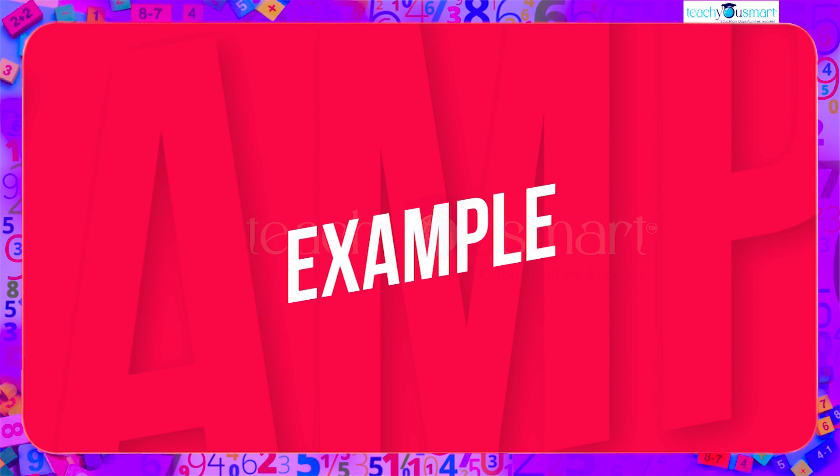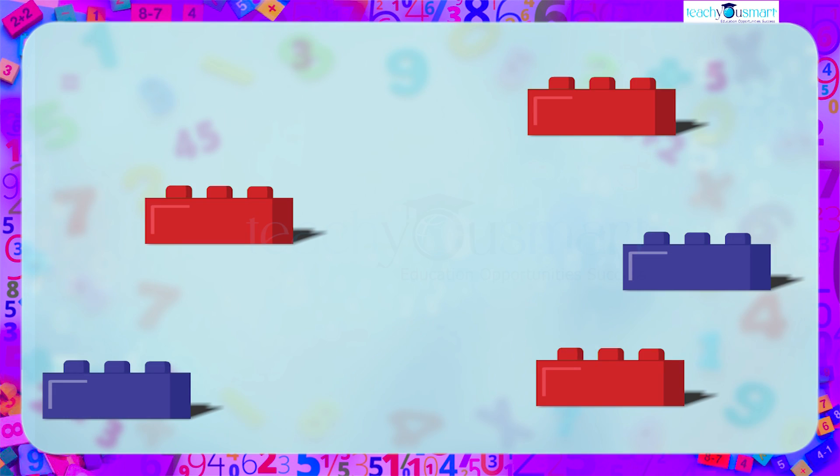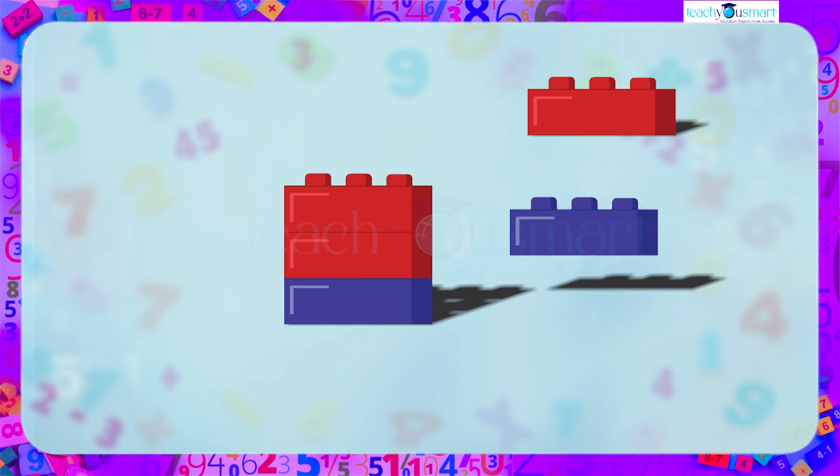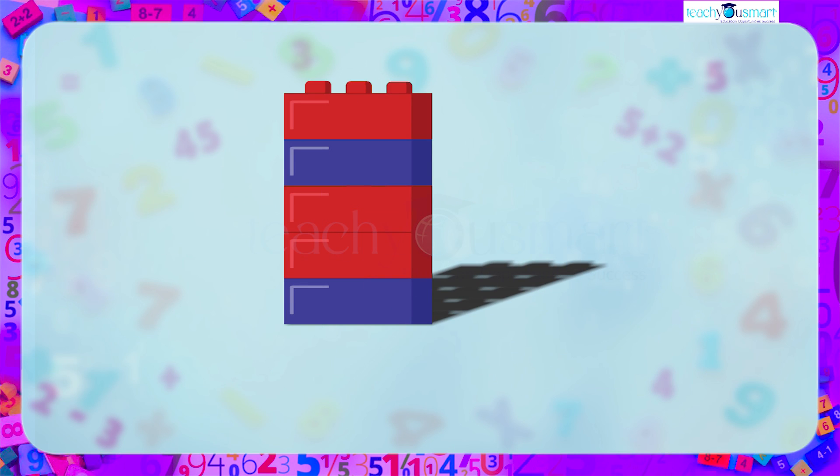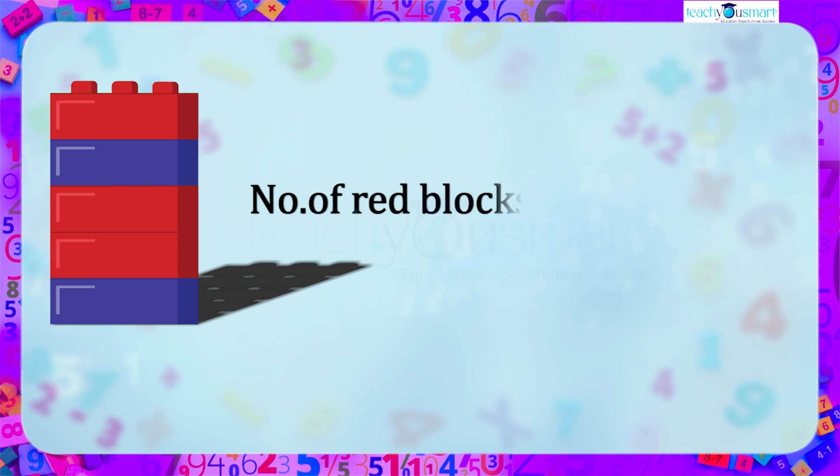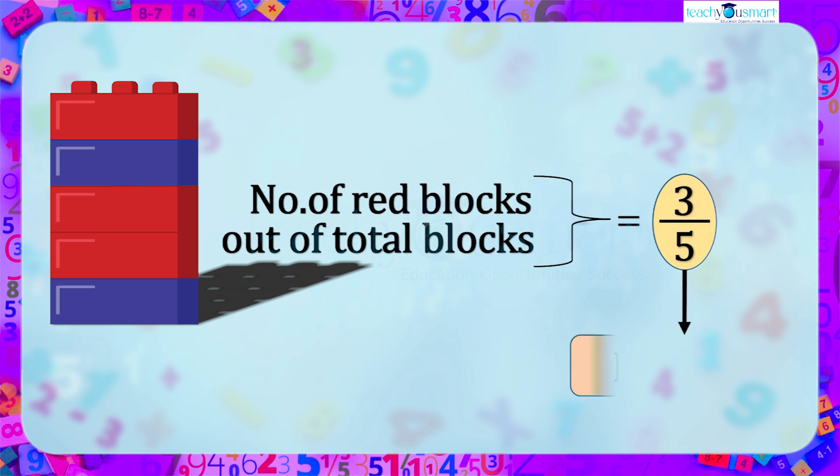Let's check another example. Look here, there are 5 blocks. These 5 blocks are arranged 1 by 1. 3 of them are red. That is, 3 blocks are red out of 5. We can represent the red blocks as 3 by 5. Here 3 by 5 is a fraction.